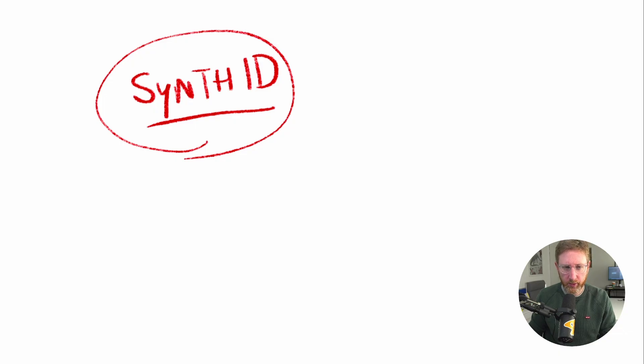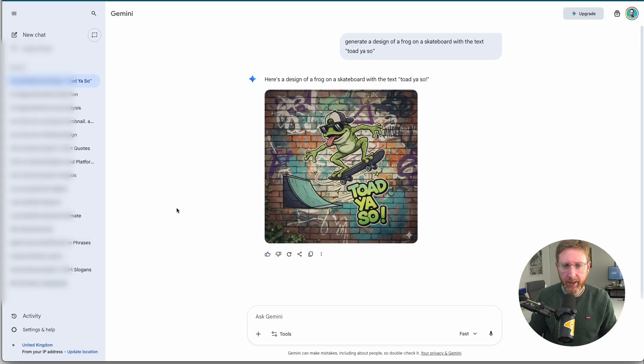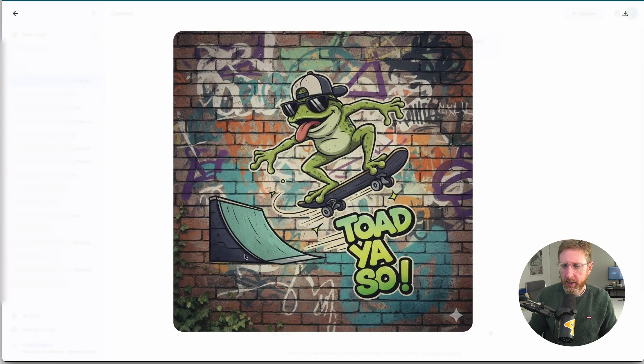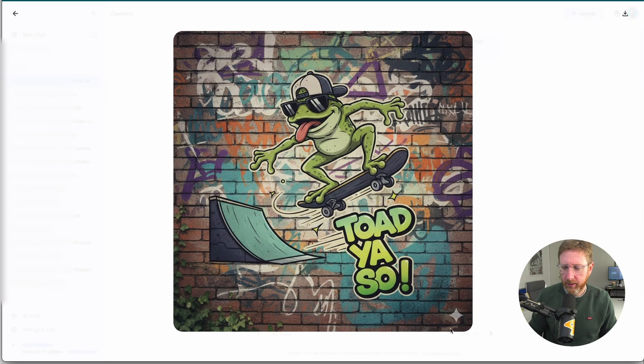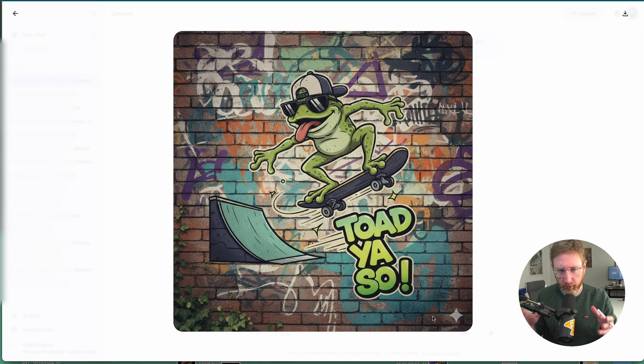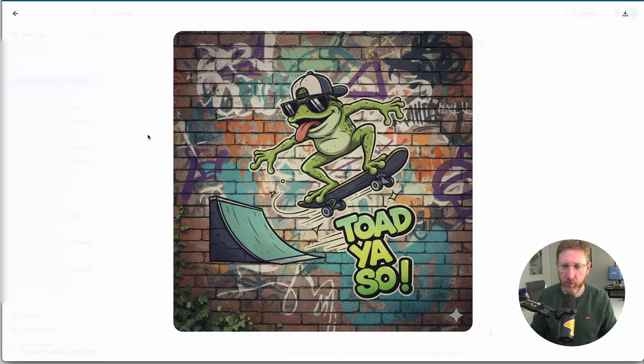Which is a watermarking feature for all images that are generated with the AI. So if you generate an image directly in like Google Gemini, as you can see here, they add a visible watermark. There's a little logo right at the bottom there, that's a watermark that comes from Google.